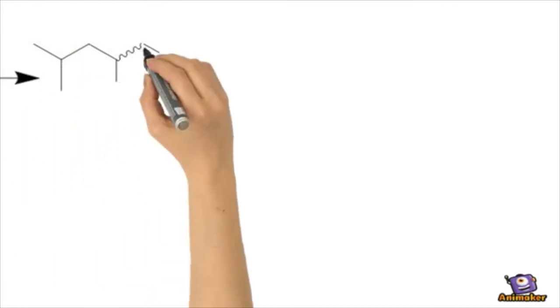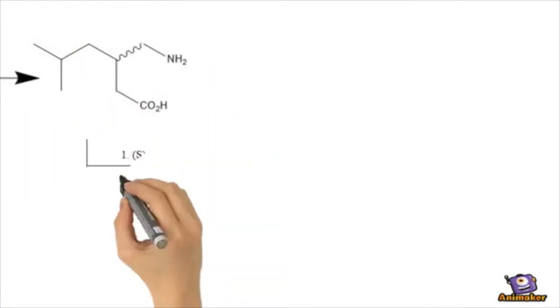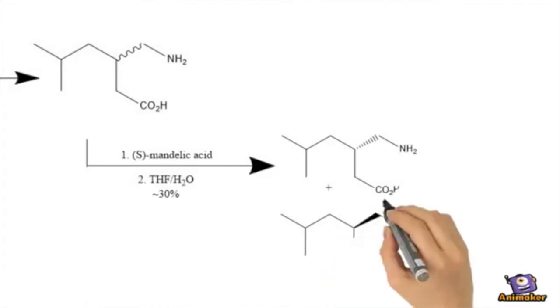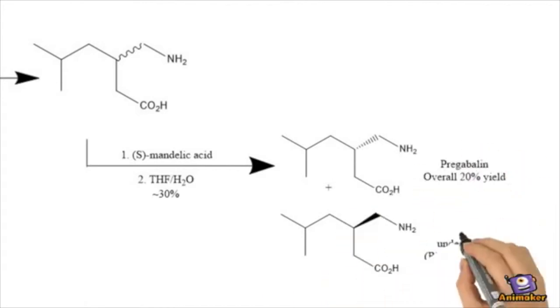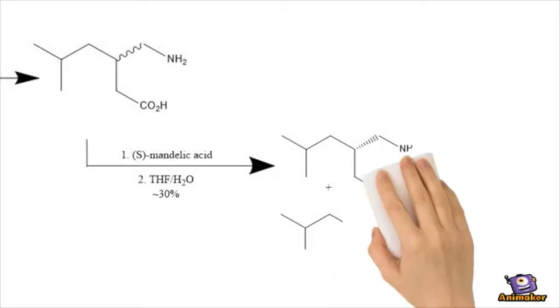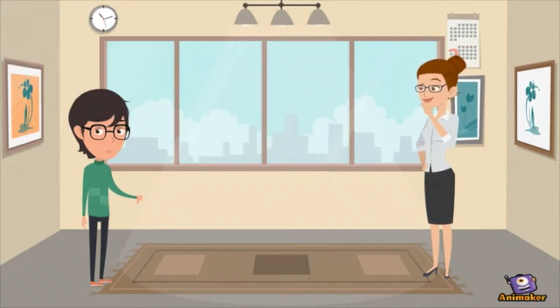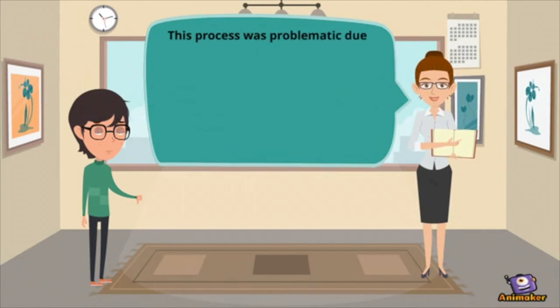The resulting amino acid is a racemic mixture. The S enantiomer is the active pregabalin compound; the R enantiomer is inactive and waste. This mixture is then racemized by using a stoichiometric amount of mandelic acid, and recrystallization in THF yields of 20% are reported.